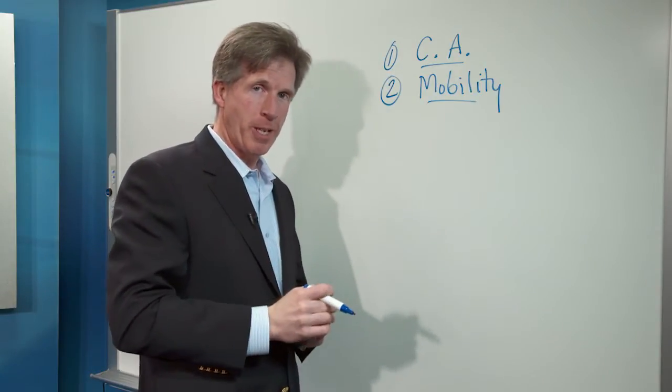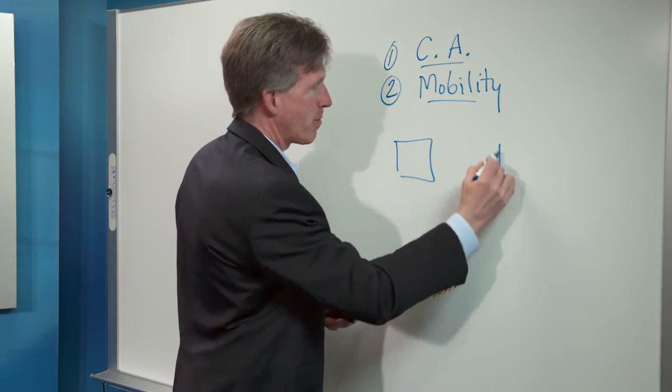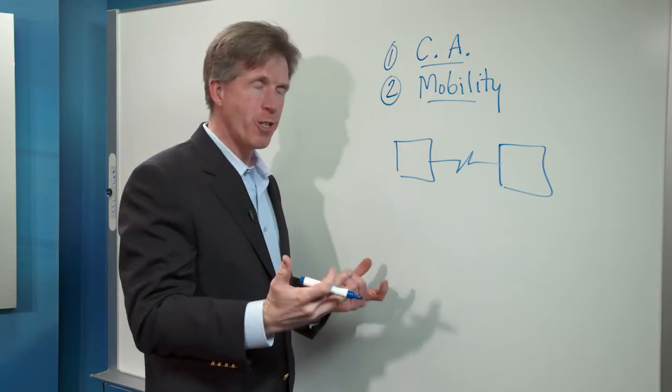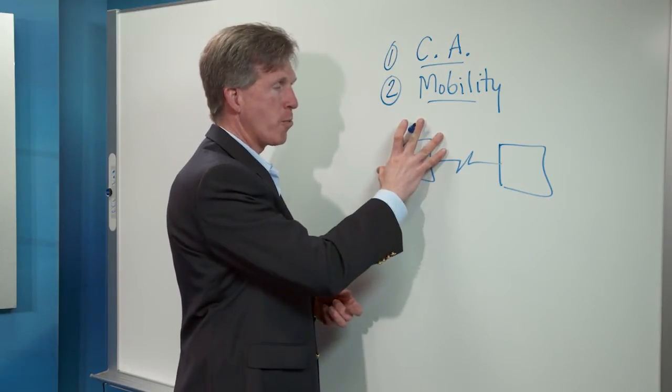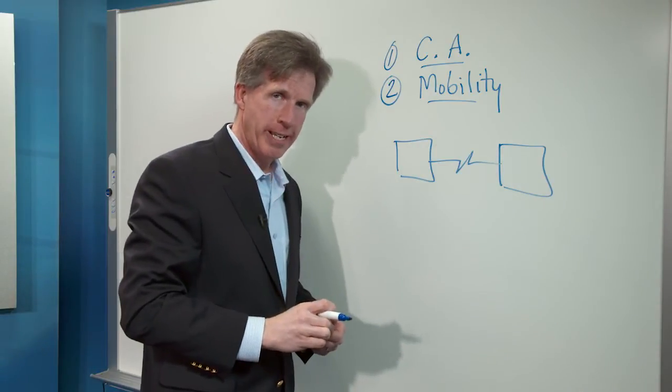First, continuous availability. What's the simple storyline? Let's say I have two data centers, data center one, data center two, they're linked together. In a traditional environment, if I lose data center one, I have to go through a lot of work to bring that second data center back online.